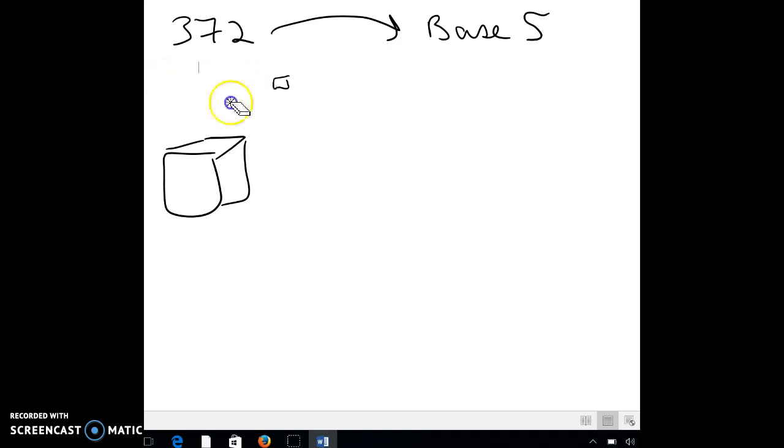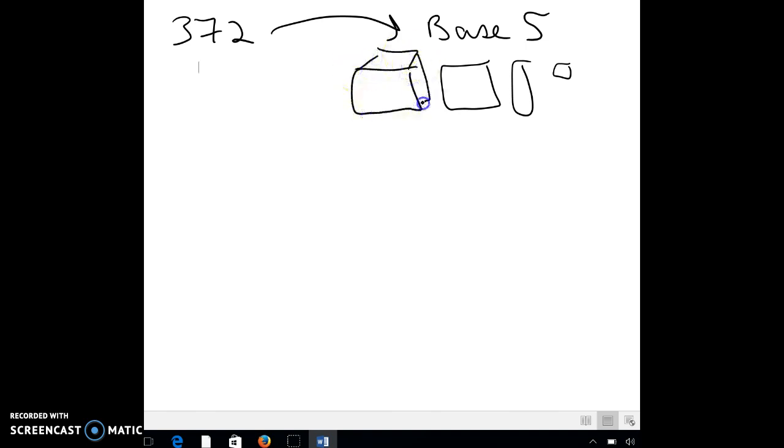And in a sense, we still have those shapes, except now in base 5, those shapes are grouped by 5. So a single would be worth 1. These would have 5 in it. This would be 5 by 5, so that'd be worth 25. And then your cubes would be 5 by 5 by 5. So these are worth 125, 25, 5. And then, of course, singles are always worth 1.